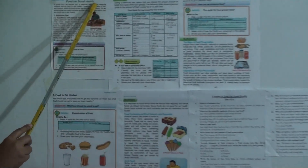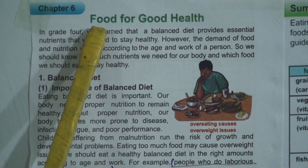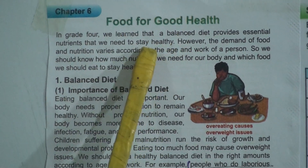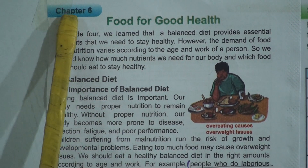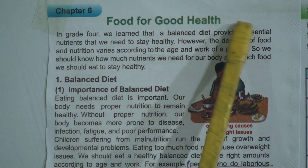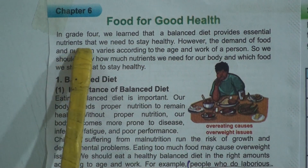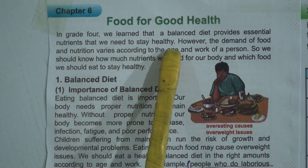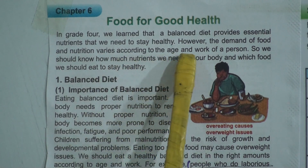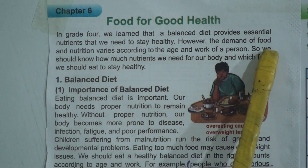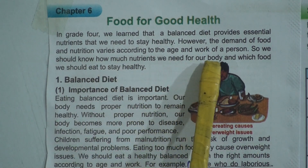With this chapter, today we will also discuss short question answers related to the chapter. So let us move forward to this topic: food for good health. In Grade 4, we learned that a balanced diet provides essential nutrients that we need to stay healthy. However, the demand for food and nutrition varies according to the age and work of a person, so we should know how much nutrients we need for our body.